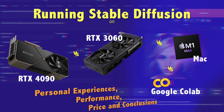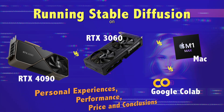Hey guys, today I want to give you a comparison of how Stable Diffusion performs on different systems. As a longtime Mac user I started to work with Stable Diffusion on my Mac, but about a year ago I bought a mid-range PC with an RTX 3060 because I needed to do some projects with the Unreal Engine, which doesn't work well on a Mac. And of course I also used it for Stable Diffusion.